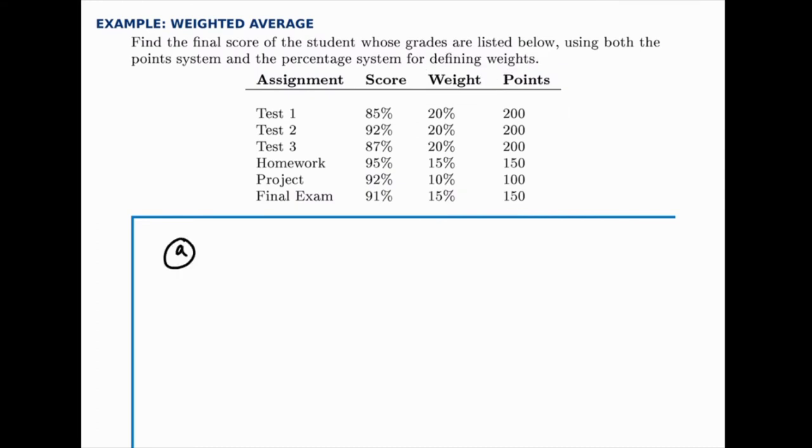For part A then let's use the weights. So for the weights we can multiply each score the student got by the weight that's associated with it, and once we multiply those and add them all together the answer we'll get at the end is the average score.